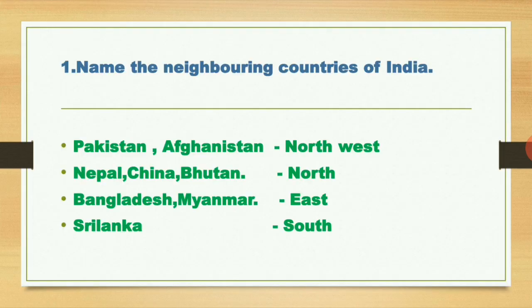Two more questions. First: name the neighboring countries of India. There are eight neighboring countries of India. Pakistan and Afghanistan are situated in the north-western part of India. Nepal, China, and Bhutan are situated in the northern part of India. Bangladesh and Myanmar are situated in the eastern part of India.